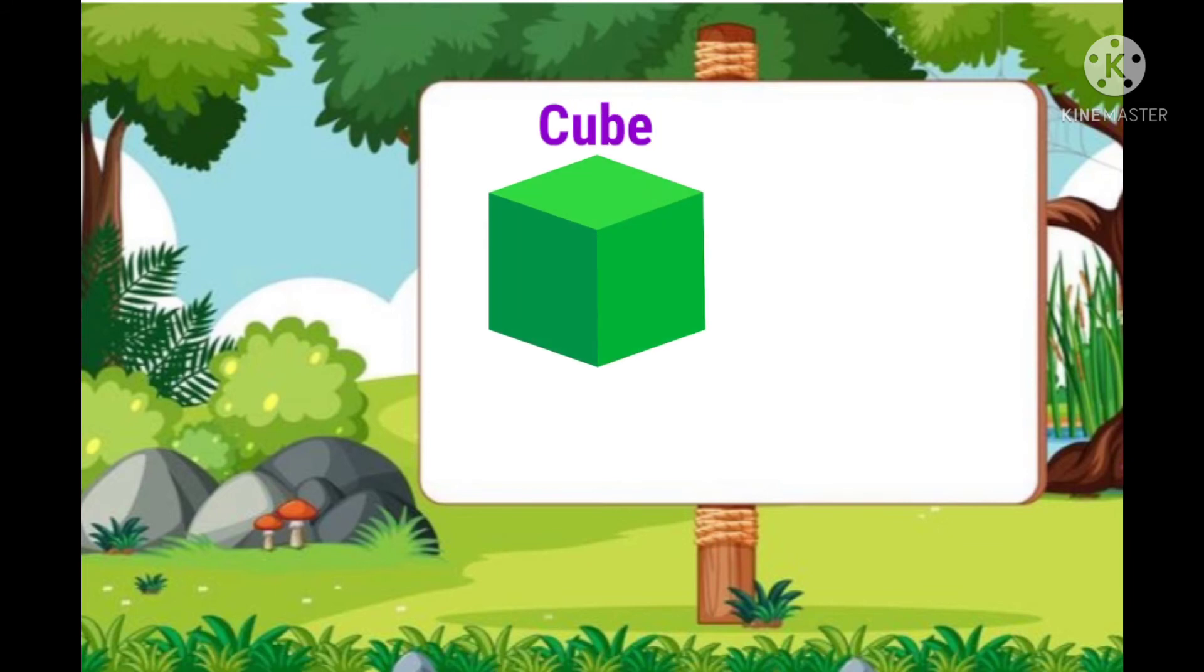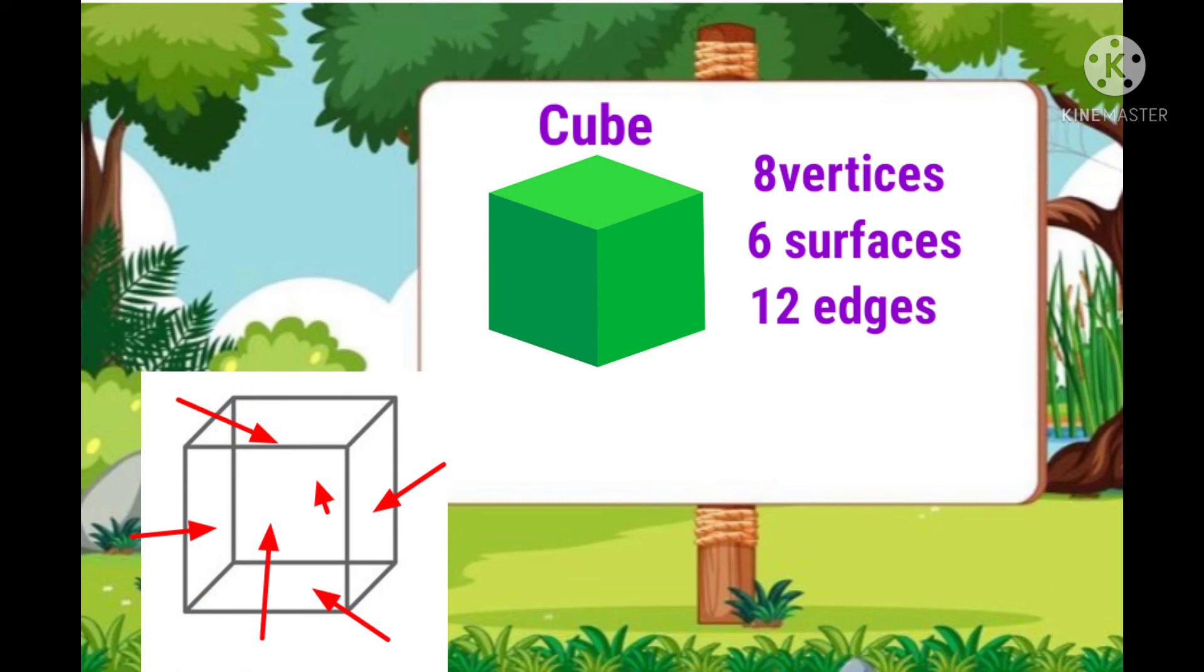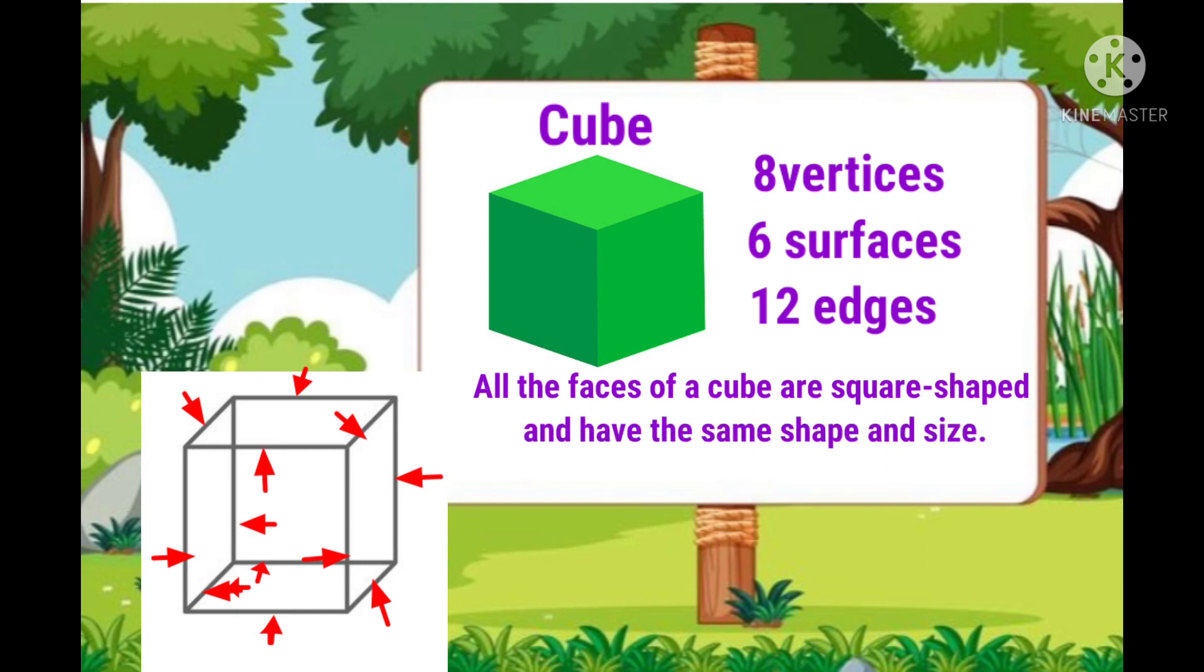Some objects have the shape of a dice. We call this shape a cube. A cube also has 8 vertices, 6 surfaces and 12 edges. All the faces of a cube are square shaped and have the same shape and size.